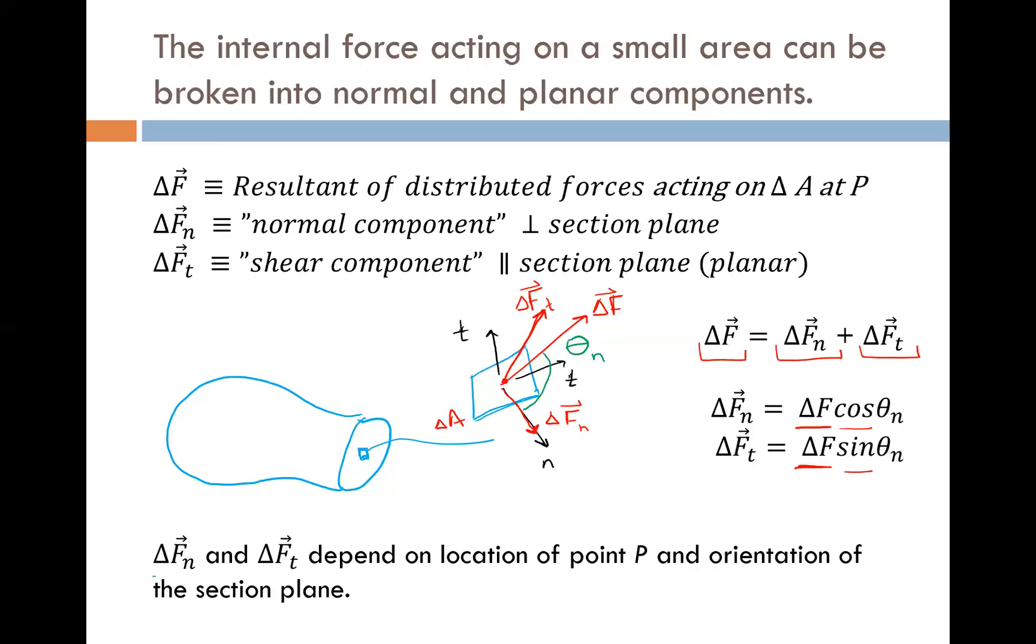These components, delta Fn and delta Ft, normal and tangential, depend on not only the location of point P—so in this case point P is here—if we move to a new location, point P prime over here, we would get different components. Assuming that the resultant were different, the force may not be the same acting on every little incremental area. So if we have a different delta F over here, delta F prime, different magnitude, then it would follow that we would get different components.